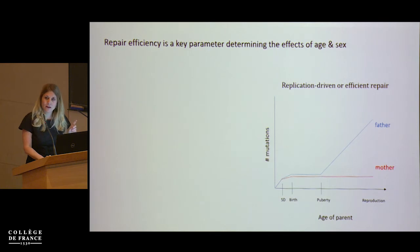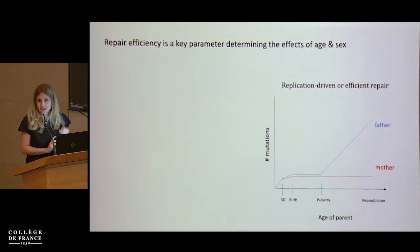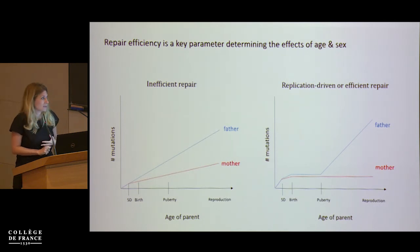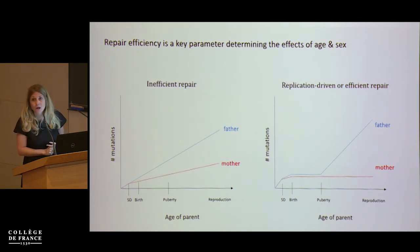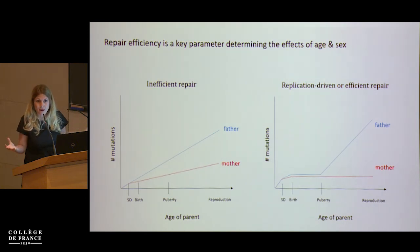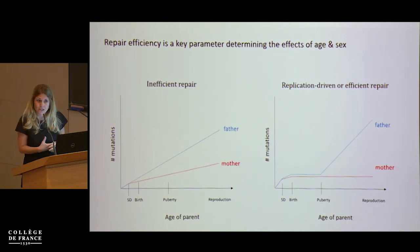Specifically, if we think about replication-driven mutations or mutations that are non-replicative but very efficiently repaired, we expect them to look quite different in the two sexes. However, if a mutation is due to damage and inefficiently repaired, we would expect it to accrue with absolute time — not necessarily at the same rate in the two sexes, since damage rates might differ between spermatogenesis and oocytes.